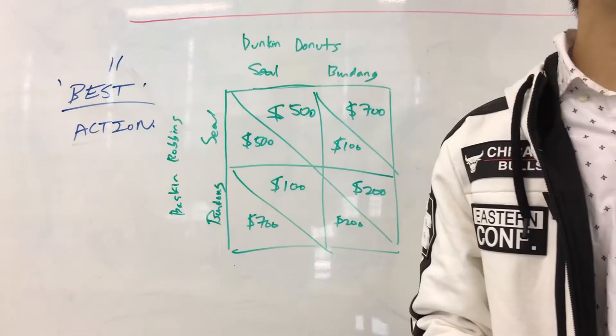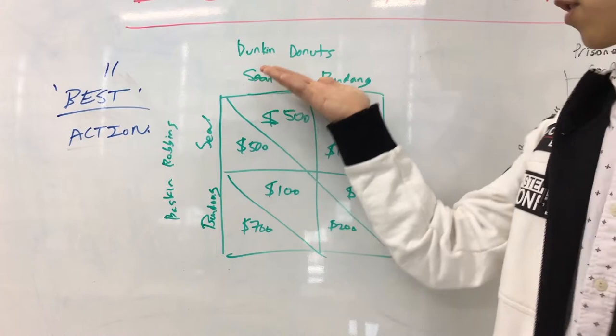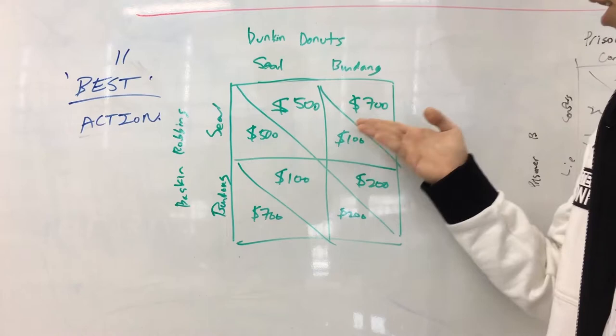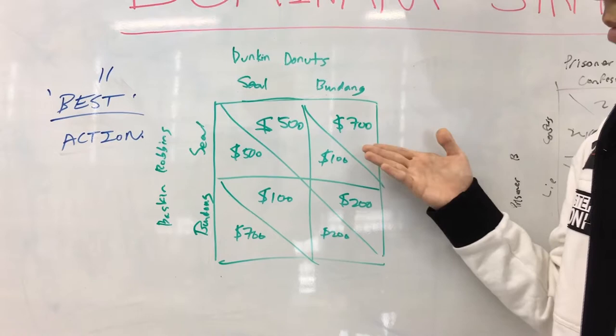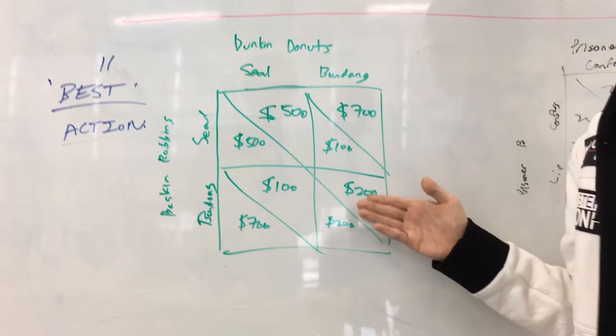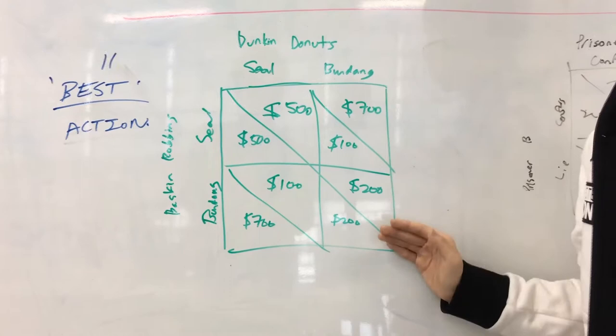The way to determine this is to firstly consider what the opponent will choose. Looking at it from the perspective of Dunkin Donuts: if Baskin Robbins decides to set its shop in Seoul, then Dunkin Donuts chooses between $500 or $700 — and the better choice is $700. If Baskin Robbins decides Brundang, then Dunkin Donuts chooses between $100 or $200, and will decide $200. This is why the dominant strategy for Dunkin Donuts is to produce in Brundang.